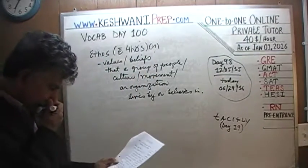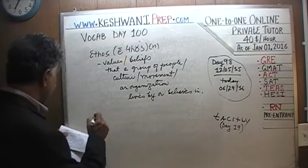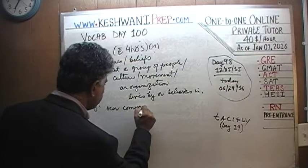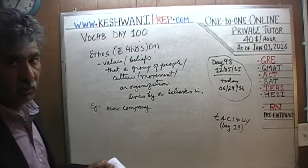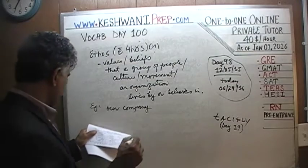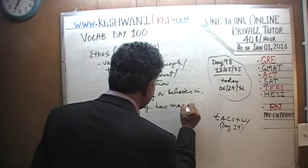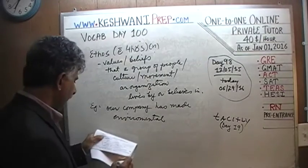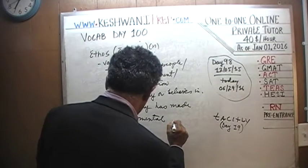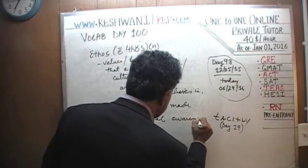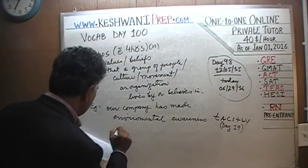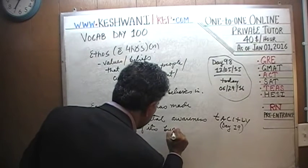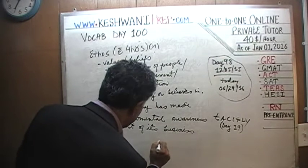For example, here's how you would use the word in a sentence: 'Our company' — or our religion, our group, our school, our organization — 'has made environmental awareness part of its business ethos.'